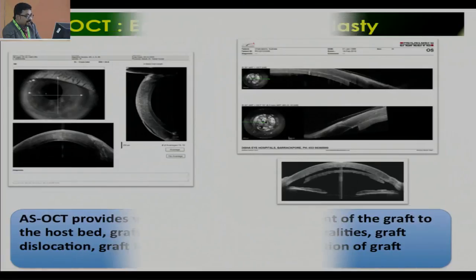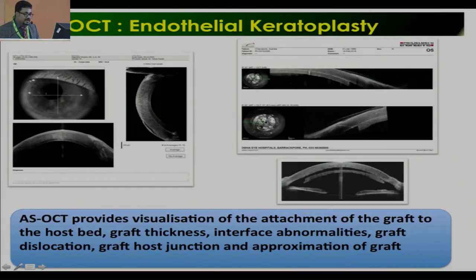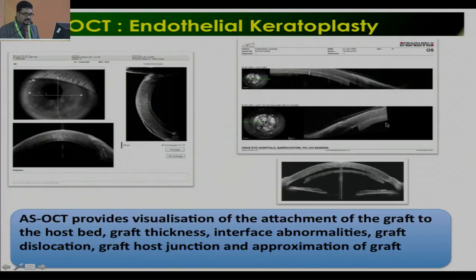In endothelial keratoplasty, ASOCT provides visualization of the attachment of the graft to the host bed, graft thickness, interface abnormalities, graft dislocation, graft-host junction, and approximation of the graft. We can see where there is a fluid cleft and the graft is dislocated, and also where the graft is perfectly attached at the incision site with no cleft.